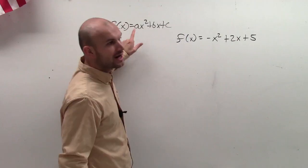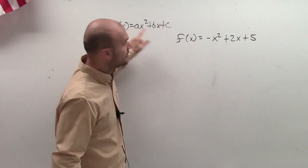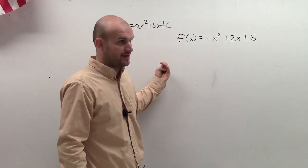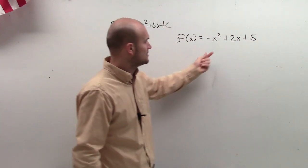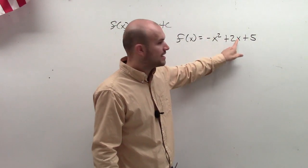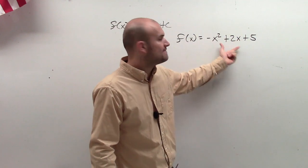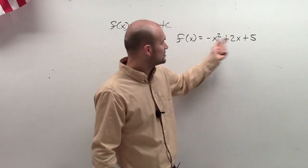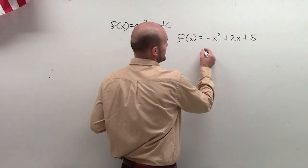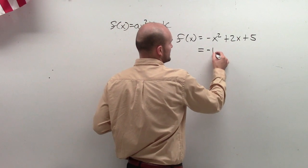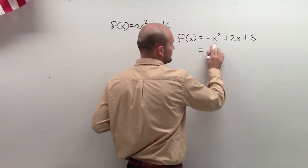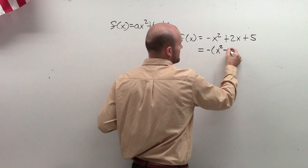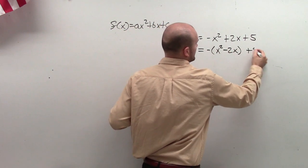The next thing we want to do is make sure our a is going to be 1. Here, we have a as negative 1, so I have to factor that out. When I factor that out, if I have my squared and my linear term, I want to factor it out of both of those terms. I prefer just to factor out of these two terms. When I factor that out, I'm now left with negative 1, or you can just do the negative. Now I have x² - 2x plus 5.